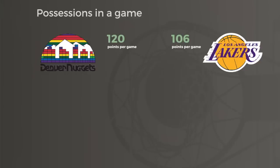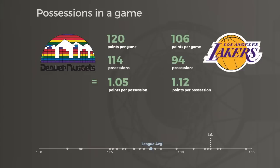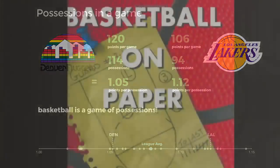Traditional thinking would view Denver as a better offensive team, but the Nuggets had way more opportunities to score those points. They averaged 114 possessions per game, whereas the slower Lakers only averaged 94. So per possession, the Lakers were one of the most efficient offenses in the league, while the Nuggets were below average.